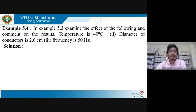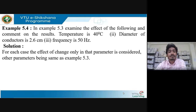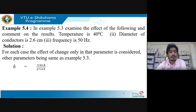Continuing with the same data, the temperature is now changed to 40°C (previously 38°C), and the diameter and frequency are also changed. The simplification procedure remains the same as the previous problem. Since temperature changed, delta must be recalculated: with t = 40°C and pressure still 76 cm, delta changes to 0.952.